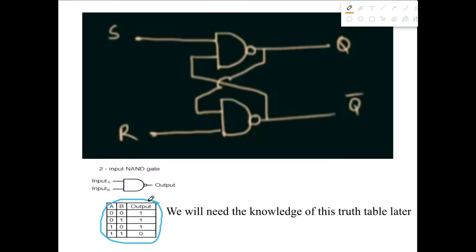This is the truth table for the NAND gate. From this truth table we need to find out a specific pattern. We can see that the output becomes one when there is at least one zero in the inputs. There are two different inputs A and B, and if at least one input is zero, then the output becomes one. This pattern will be really useful in our further explanation.